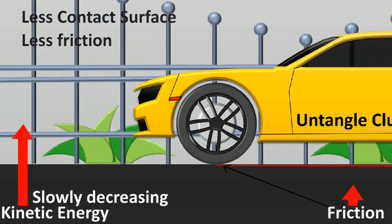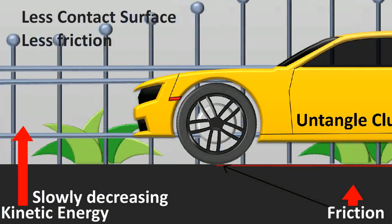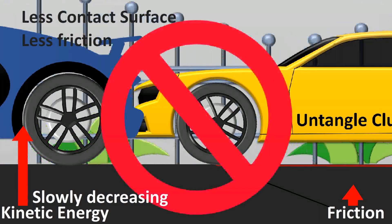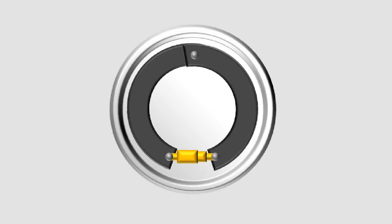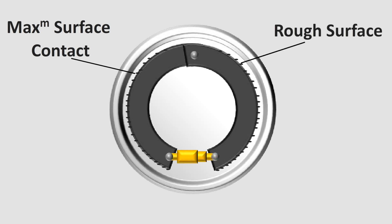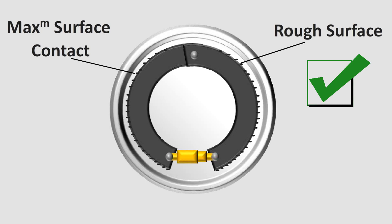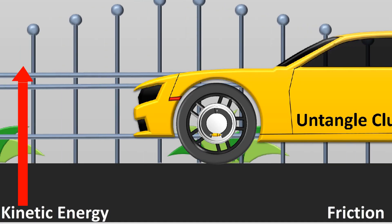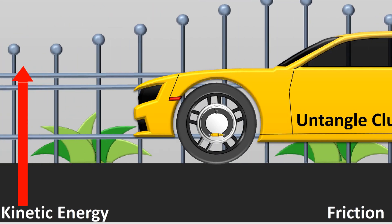Hence, long distances of rubbing are needed to absorb the kinetic energy of the vehicle, which is very dangerous. Brakes are designed for maximum surface contact with rough surfaces, making them a better choice for losing kinetic energy and stopping your vehicle faster. So rather than locking them up, using the brakes for longer is the wiser option.